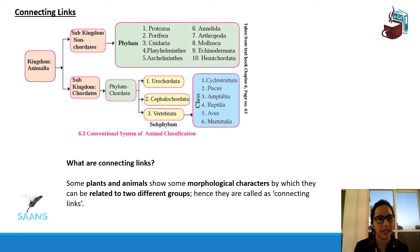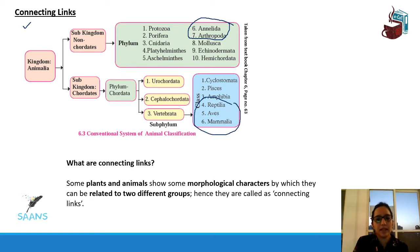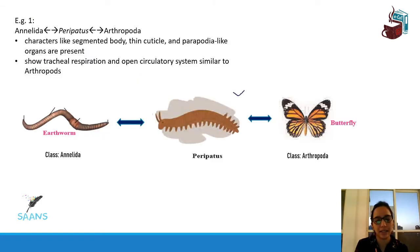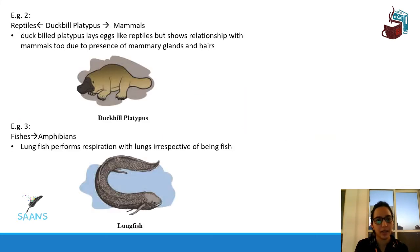In Part 1.4 we saw what connecting links are. We saw that the connecting link occurs between Annelida, Arthropoda, Reptiles, and Mammals. Peripatus is a connecting link between Annelida and Arthropoda of the animal kingdom. We also saw the duck-billed platypus as a connecting link between reptiles and mammals, and how lungfish shows similar qualities of an amphibian.